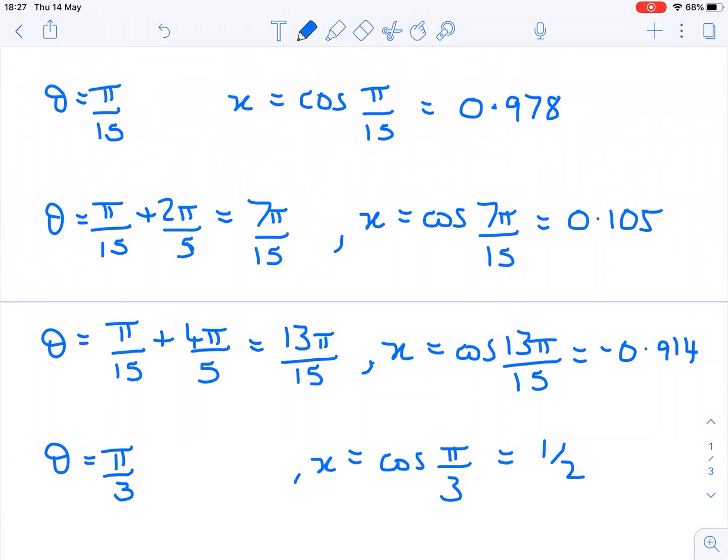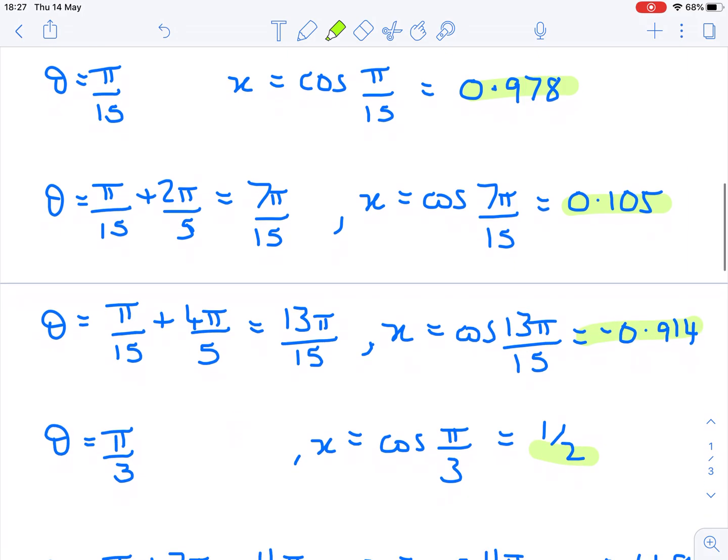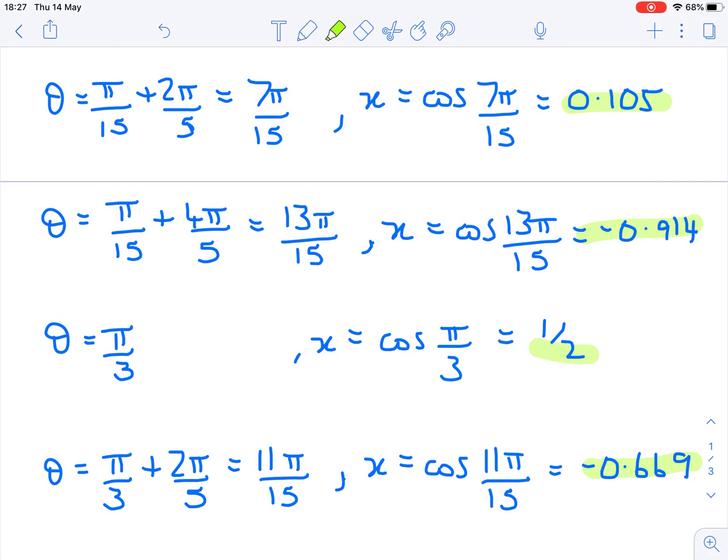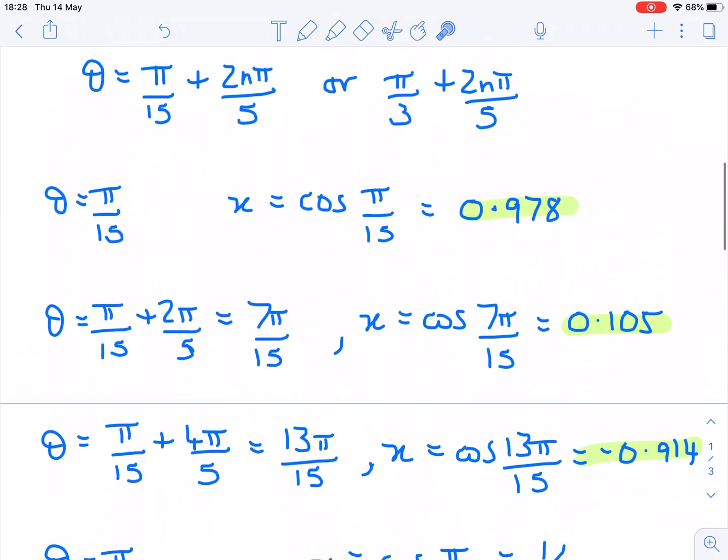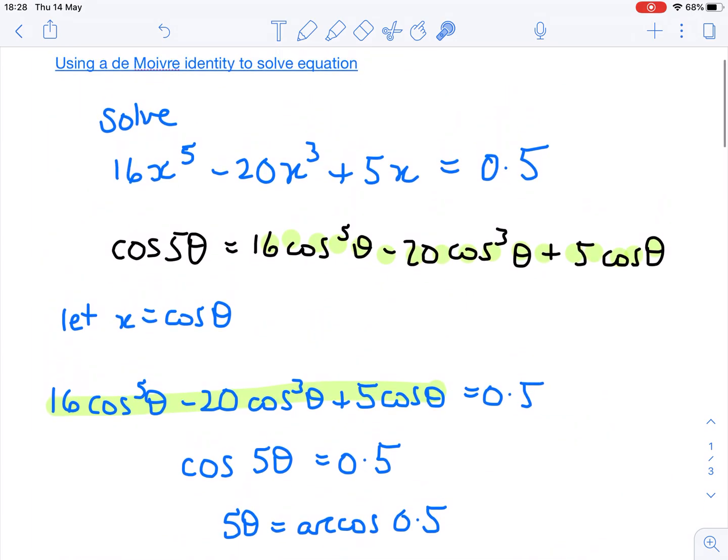What we have then are five distinct solutions for x. Given that this is a polynomial with an order of five, that's what I would expect is five distinct solutions. But if you look at the values of θ that we've got, if I start adding another 2/5 of π to any of these, we're going to get out of range and we're going to repeat a solution that we've already got. So the five solutions are all the distinct solutions that there are. Those are the values of x for which this original statement is true, arrived at by substituting in a De Moivre identity and therefore making the equation much easier to solve.